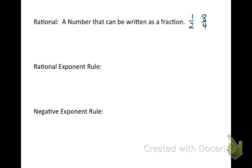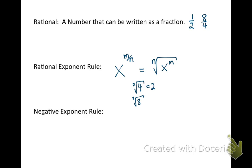The rational exponent rule is: if you have x, or any base, to a fraction — say the fraction m over n — that is equal to the nth root of x to the m. Now, you're probably familiar with a square root. The square root of four is two. A square root is a second root — it just means what squared equals four. Well, two squared equals four. If you take the cube root of eight, we're saying what to the third power equals eight. Two to the third is eight, so this is two as well. So it's just another type of root.